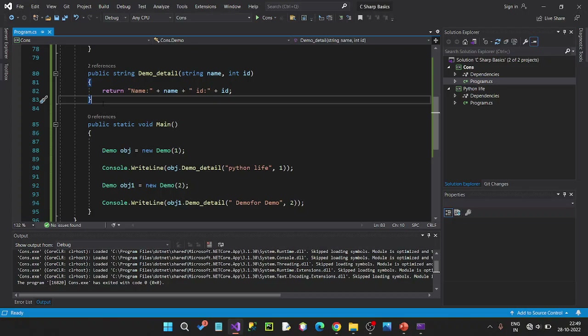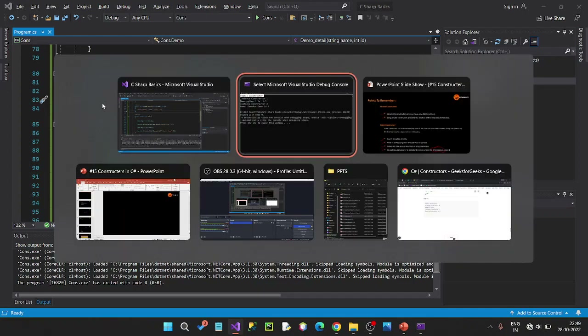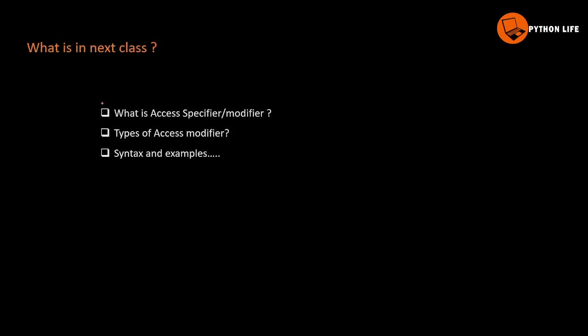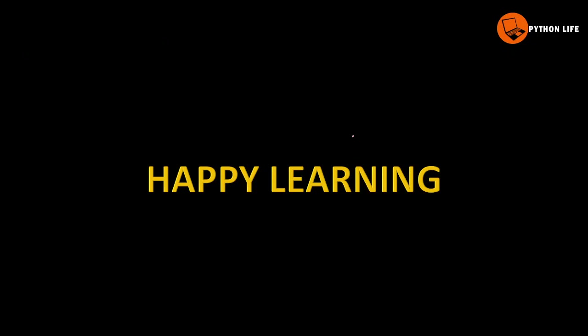This is default, parameterized, private, copy, static constructor — all covered. What is access specifier? Access specifier and modifier. Next: access modifier types and syntaxes with examples. Happy learning! Thank you!